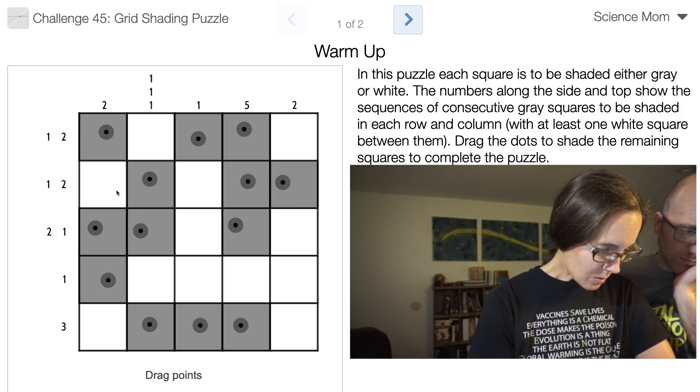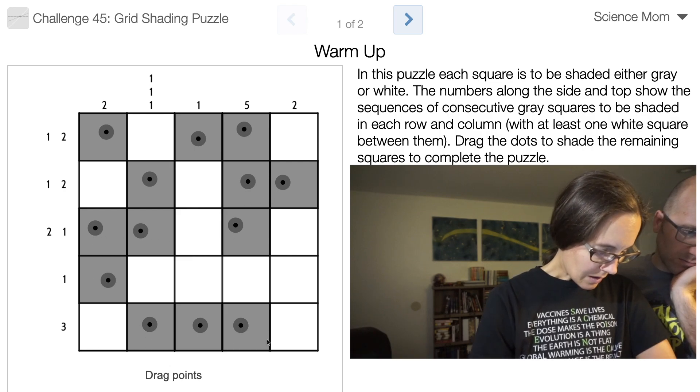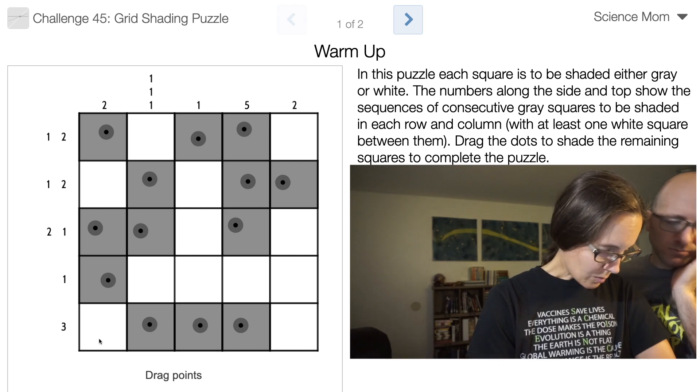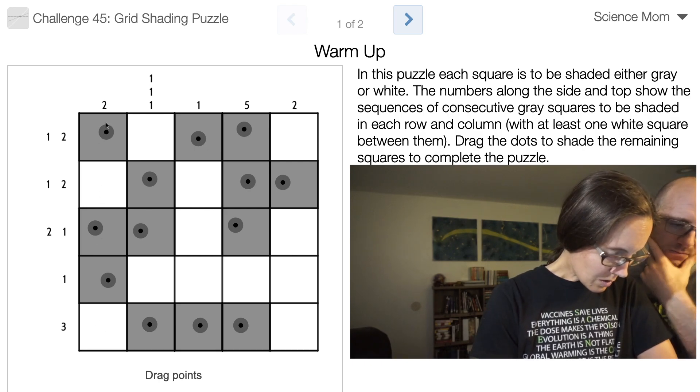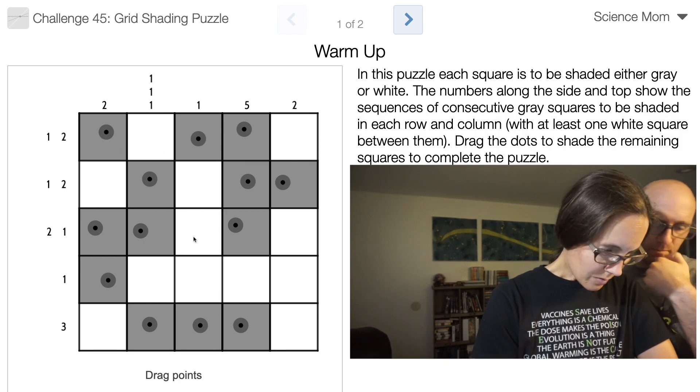I'm just going to kind of throw them up here and then arrange them after I get them up here. So we have one and two, one and two, two and one, one and three, and that's all the points. And now we're in trouble here because we have three instead of two. We're in trouble all over the place.